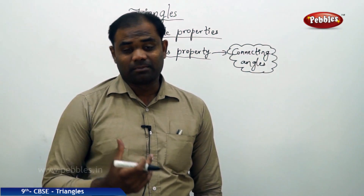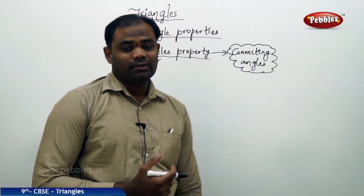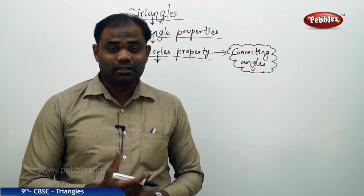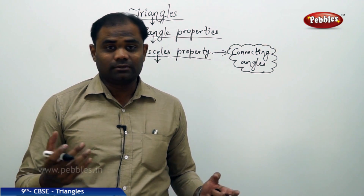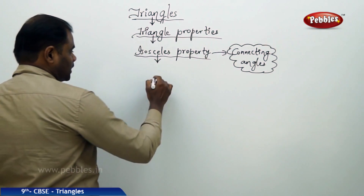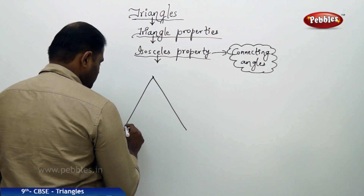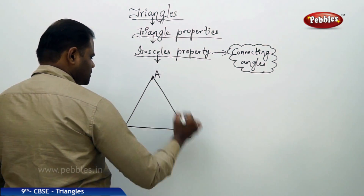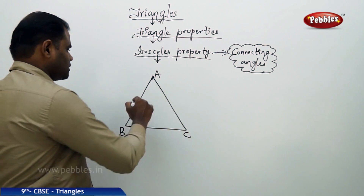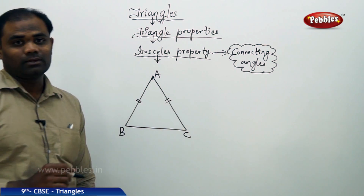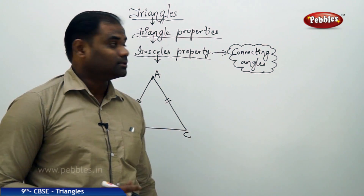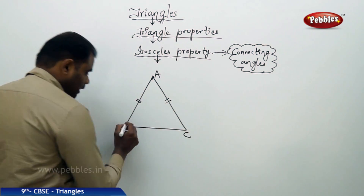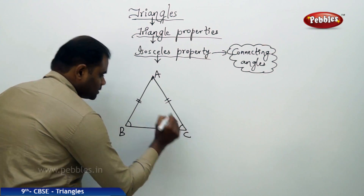Now let's see the isosceles property connecting the angles. We have defined that triangle ABC is isosceles if any two sides are equal. Now let's see how we can connect that with angles. Imagine I have an isosceles triangle ABC where the sides are equal. The isosceles property connecting the angles says that if two sides are equal, then their corresponding angles must be equal.